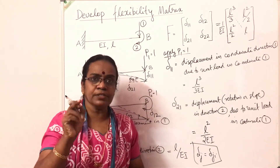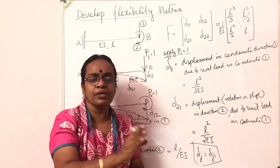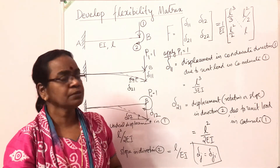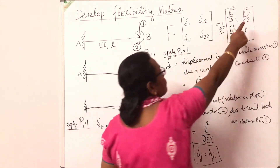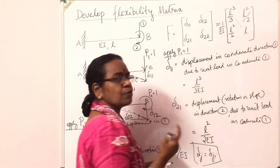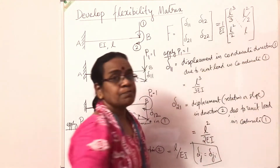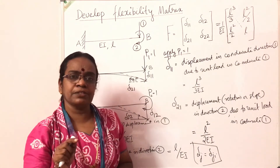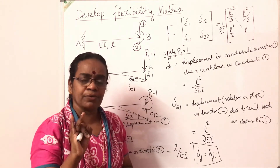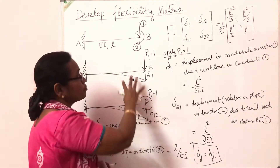The symmetry property δij = δji comes from the Clapeyron–Maxwell law of reciprocal deflections: if you give a unit load at one point, the deflection at a second point equals the deflection at the first point when a unit load is applied at the second point. So by Maxwell's reciprocal law, δ12 = δ21, making it a symmetric matrix. Also, the diagonal elements are always positive because the displacement is always in the direction of the applied load.